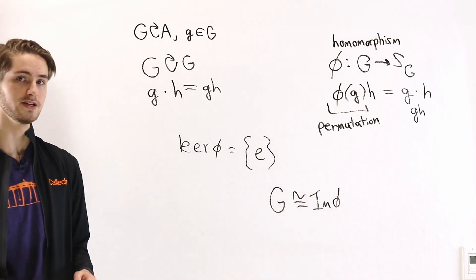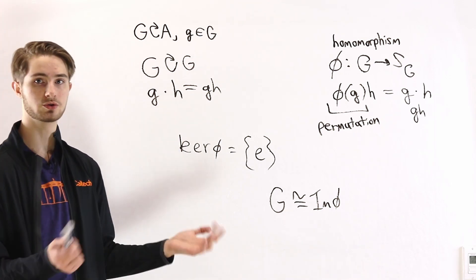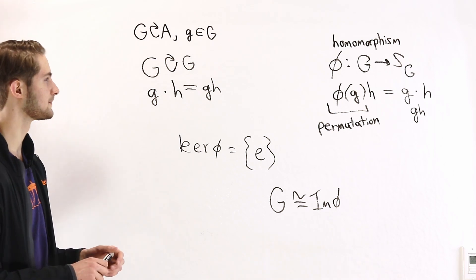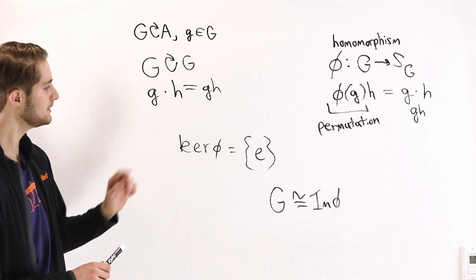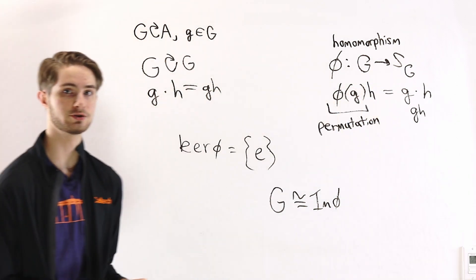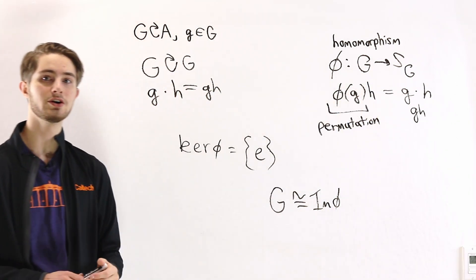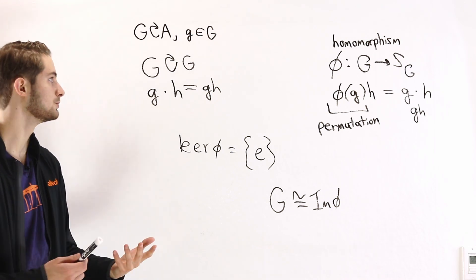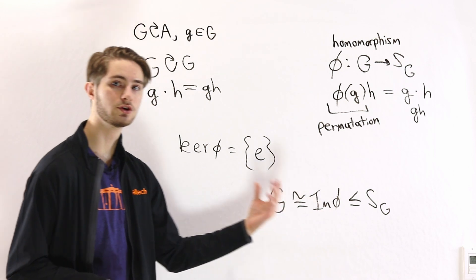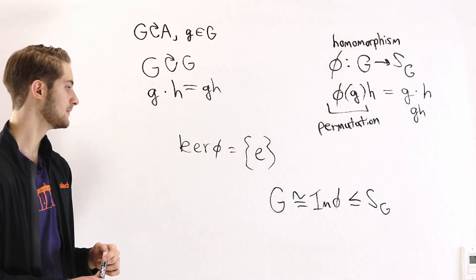Now what is the image of φ? We don't know exactly what it is because we aren't sure how this group works — we don't know about its structure and how it multiplies. But we know that the image of φ is going to be somewhere in the symmetric group. In order for this to be an isomorphism, the image of φ also has to be a group.